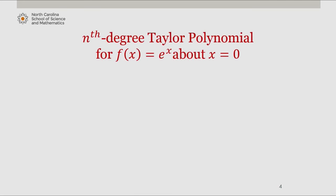So in general, our nth degree Taylor polynomial for f of x equals e to the x about x equals 0 is 1 plus x plus 1 over 2 factorial x squared plus 1 over 3 factorial x cubed plus so on,